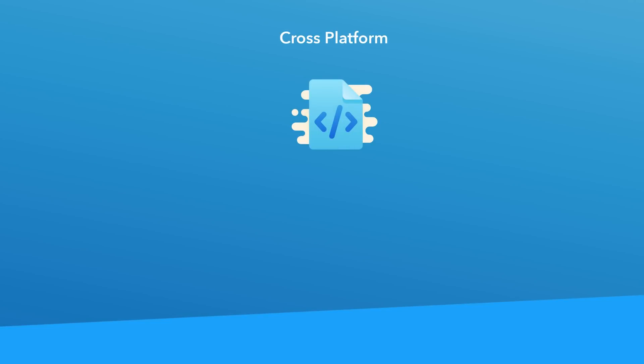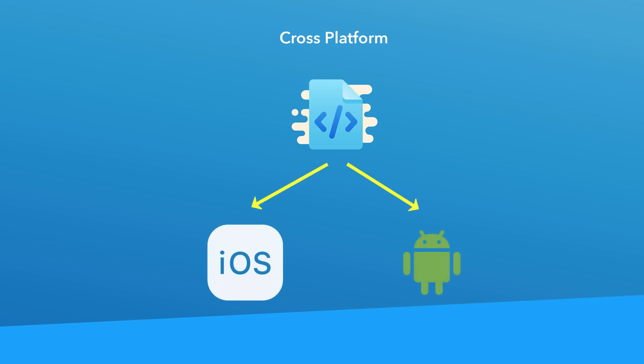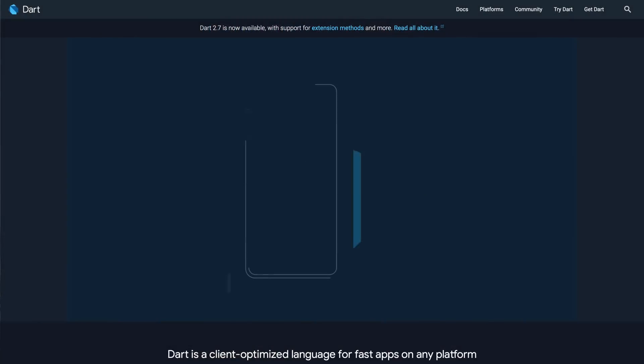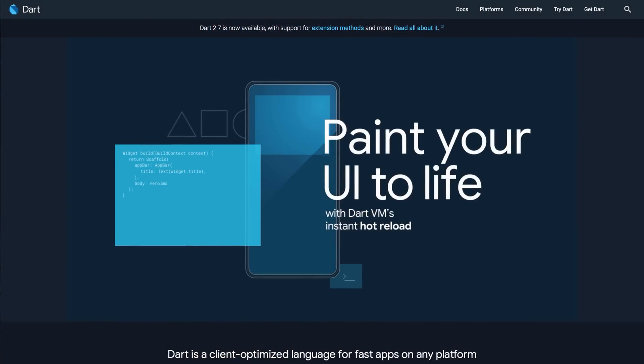At number five, we have Dart for building cross-platform native mobile apps using Flutter. A quick note — if this is your first time hearing the term cross-platform, it means that you can write a single code base and deploy your app on multiple platforms, such as iOS and Android. Awesome in theory, but not so smooth sailing in practice. I'm not here to debate whether or not Flutter is a good mobile cross-platform framework; the topic of this video is to evaluate and rank programming languages. So let's take a look at Dart and what it's good for and what's maybe not so good about it.